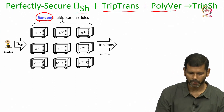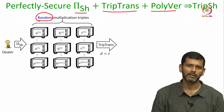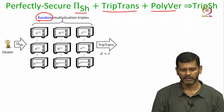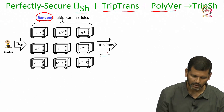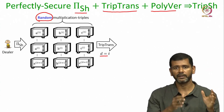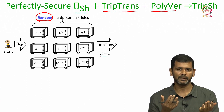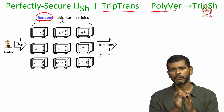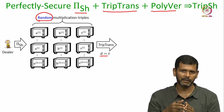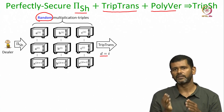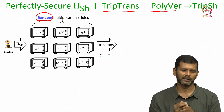What we first do is the following: the parties execute the triple transformation protocol on the triplets shared by the dealer, setting d equal to 2t. Recall that in the triple transformation protocol there is a set of secret shared triplets which may or may not be multiplication triplets, and they are transformed into another bunch of secret shared triplets which are correlated — there will be an A polynomial, a B polynomial, and a C polynomial, where the C polynomial will be the product of the A and B polynomials if all the input triplets are multiplication triplets.